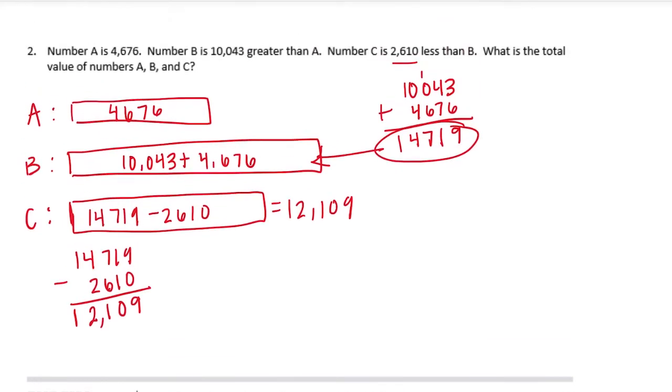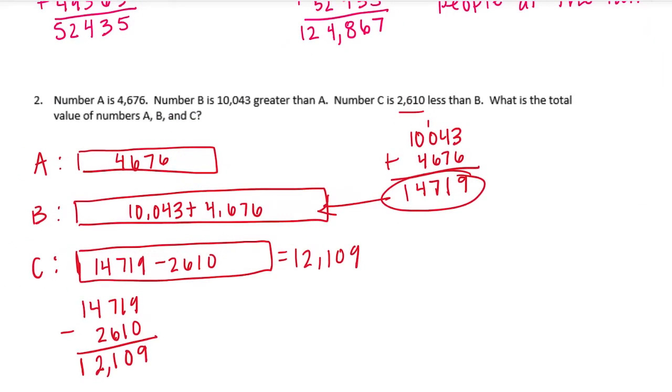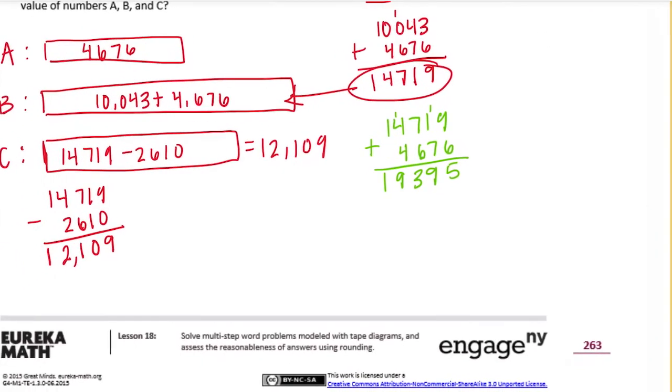Now it wants to know what's the total value of numbers A, B, and C. So now that we know what each one is equal to, we need to find the total by adding them all together. Let's start by adding A and B. We have B is 14,719 plus A is 4,676. 9 plus 6 is 15, carry the 1. 1 plus 1 is 2, plus 7 is 9. 7 plus 6 is 13, carry the 1. 1 plus 4 plus 4 is 9. And 1 plus nothing is 1.